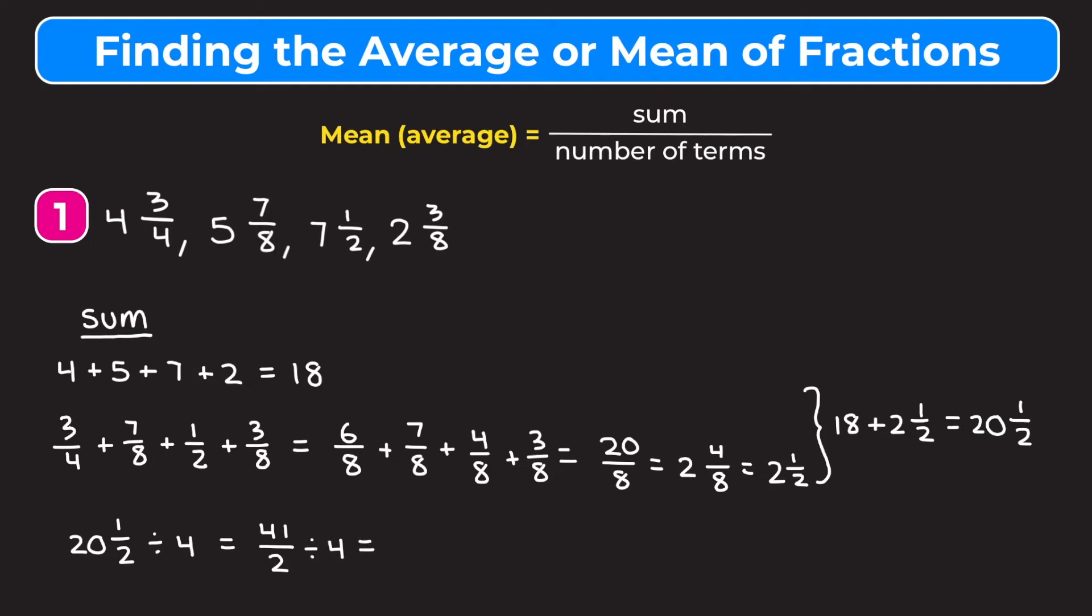And we need to divide this by four. Remember when we're dividing fractions, we need to use keep, change, flip. So we're going to keep 41 over two, change division to multiplication, and flip four. So four is normally four over one. So when we flip it, it becomes one over four. And now let's just multiply straight across. 41 times one is 41. Two times four is eight.